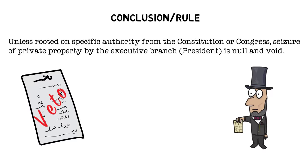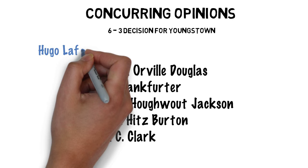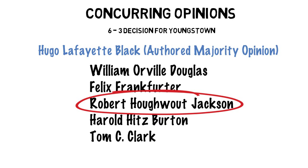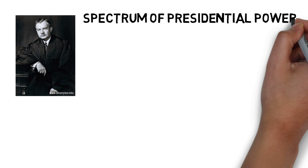The court found that the president cannot make an executive order like this without the direction of Congress, or unless he or she has that express authority in the United States Constitution, and that the president is limited to vetoing and suggesting laws, not creating laws. Interestingly enough, each of the majority members wrote their own concurrences. But the one that's had probably the most impact is Justice Robert Jackson's opinion, which really gives us the spectrum of presidential power and is a framework that helps us understand how the president and Congress work together.